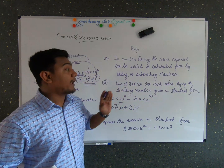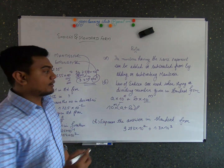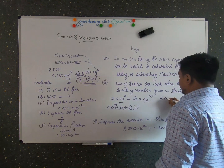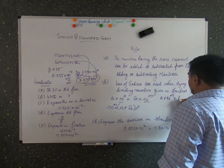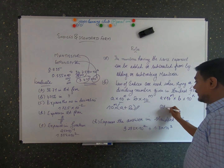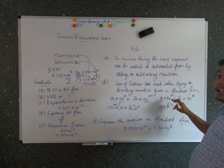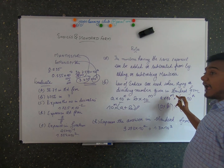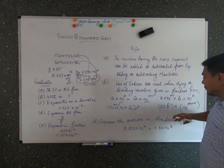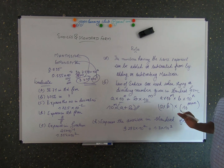Rule number two: the law of indices can be used when multiplying or dividing numbers in standard form. For example, (a × 10^m) × (b × 10^n) — you multiply the mantissas together and apply the law of indices to get a × b × 10^(m+n), since they share the same base.